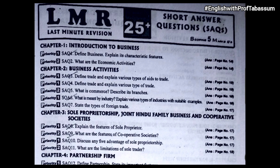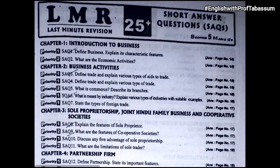Now let us see the short answers for commerce exam, chapter wise. Chapter 1, introduction to business: define business and explain its characteristic features; what are the economic activities. Chapter 2, business activities: define trade and explain various types of aids to trade; define trade and explain various types of trade; what is commerce, describe its branches; what is meant by industry; explain various types of industries with suitable examples; state the types of foreign trade.